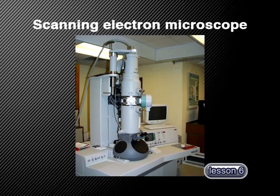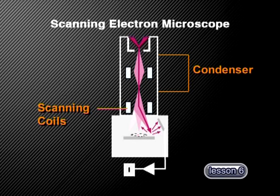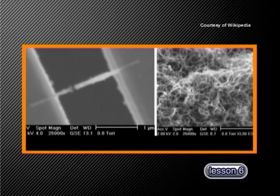A scanning electron microscope works in much the same way as a transmission electron microscope until the electrons reach the sample. Here, a set of scanning coils moves the beam of electrons back and forth across the sample. As the electrons hit each spot on the sample, secondary electrons are knocked off from the sample surface. A detector then counts these secondary electrons and sends signals to an amplifier, which then builds up the final image based on the number of electrons emitted from each spot on the sample. The image formed is similar to the one we get from a transmission electron microscope, but gives a better 3D view of the structure. Let's visit Mintec, where they regularly use different scanning electron microscopes.